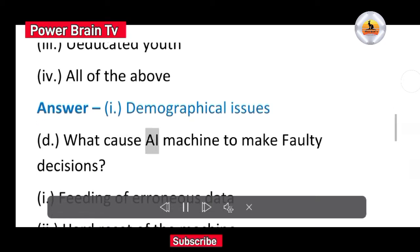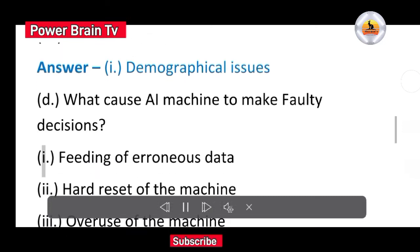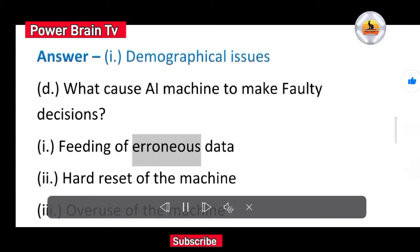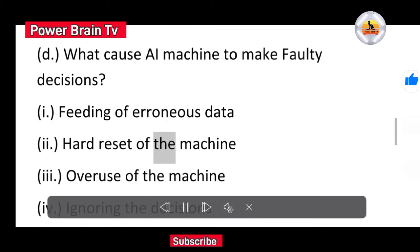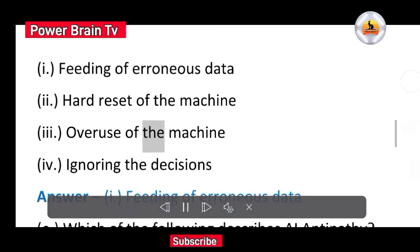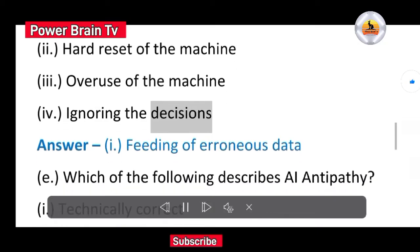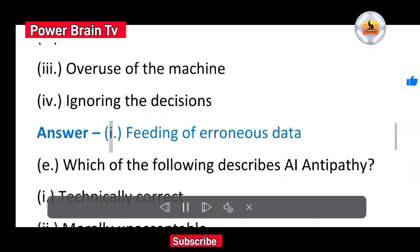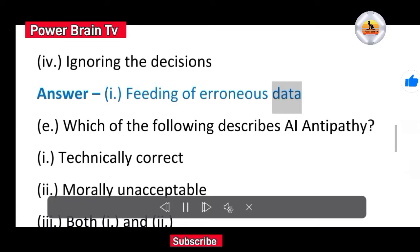D. What cause AI machine to make faulty decisions? I. Feeding of erroneous data. II. Hard reset of the machine. III. Overuse of the machine. IV. Ignoring the decisions. Answer I. Feeding of erroneous data.